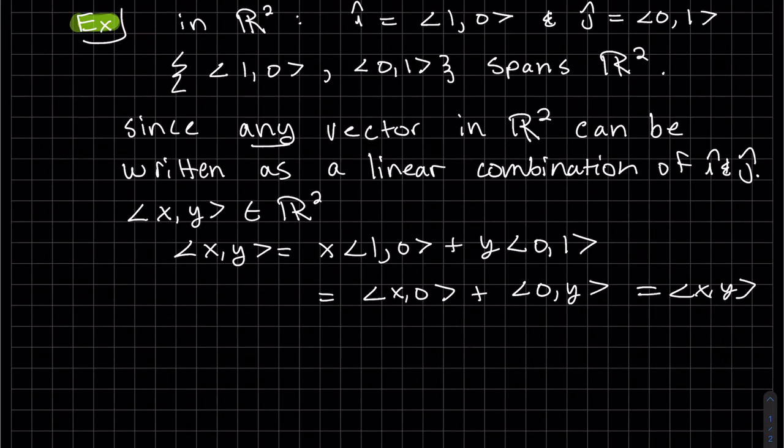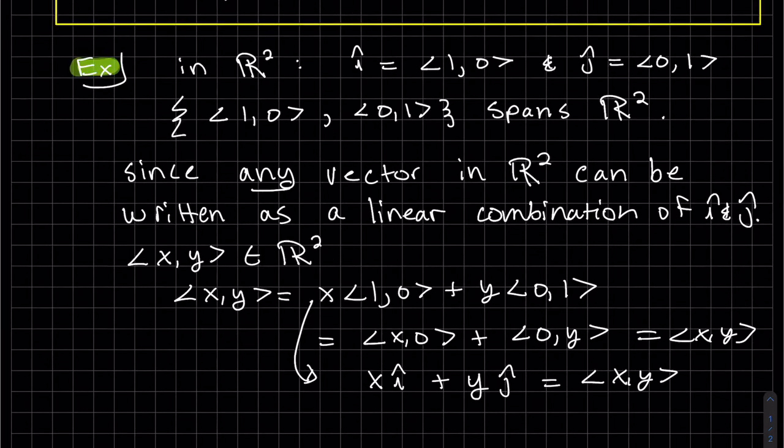But we can also see that that is just x i-hat plus y j-hat, which is the same notation as that. So we know it's true. But that's what it means. It means any vector can be written as a linear combination. And this is what it means to be written as a linear combination of those two vectors.